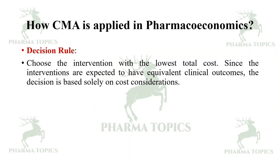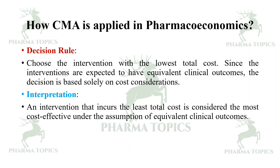Decision rule: choose the intervention with the lowest total cost. Since the interventions are expected to have equivalent clinical outcomes, the decision is based solely on cost considerations. Interpretation: the intervention that incurs the least total cost is considered the most cost-effective under the assumption of equivalent clinical outcomes.